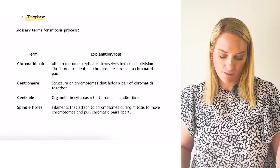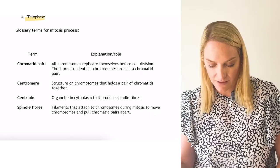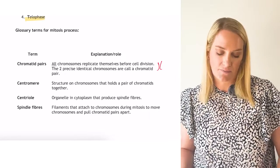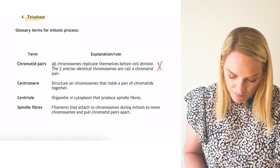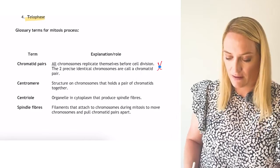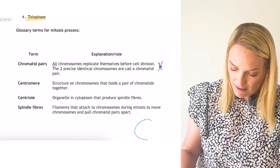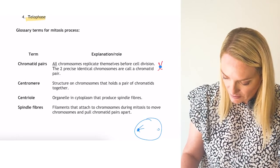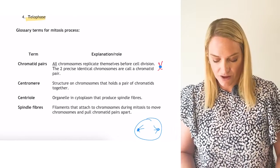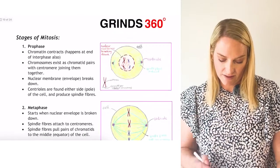Key terms: a chromatid pair consists of two identical chromosomes produced when a chromosome replicates before cell division. The centromere is the structure on the chromosome that holds the pair of chromatids together. Centrioles are organelles in the cytoplasm that produce spindle fibers. Spindle fibers are the filaments that attach to chromosomes during mitosis.